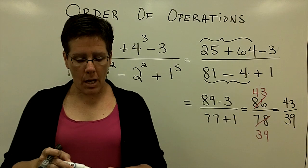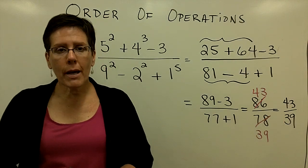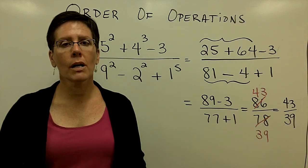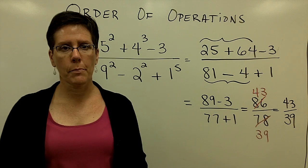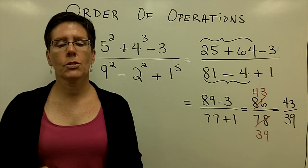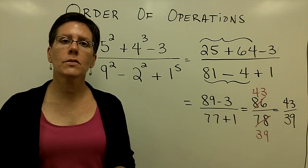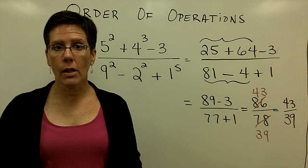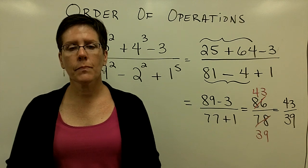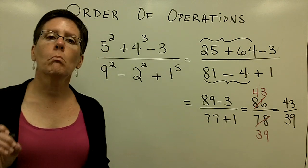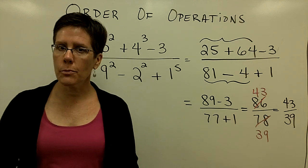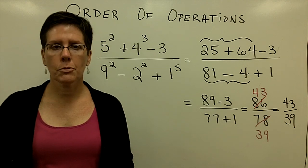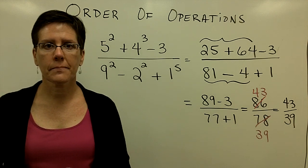When you are arithmetically simplifying a problem, you must follow order of operations: do anything in parentheses first; following that, evaluate all exponents; then multiply and divide working from left to right; and finally, add and subtract working from left to right.